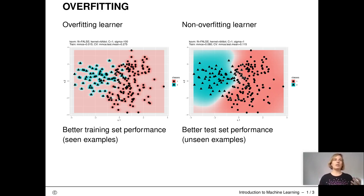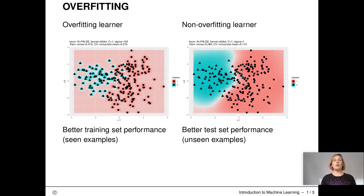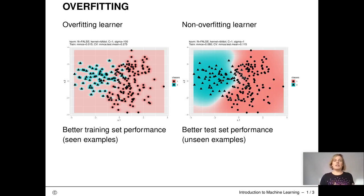Look at this example here. On the axes we have the two features x1 and x2. The colors are the predictions and the shapes of the points are the true classes. In the left plot we see that the prediction is very much focused on the individual observations. This looks very much like overfitting.